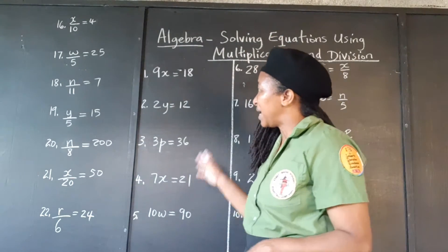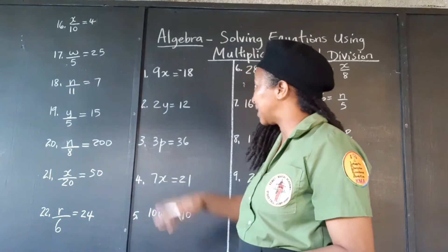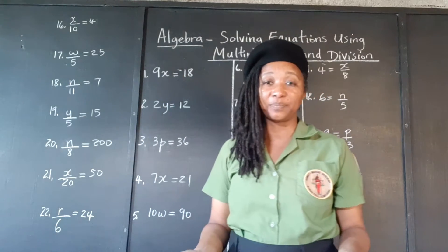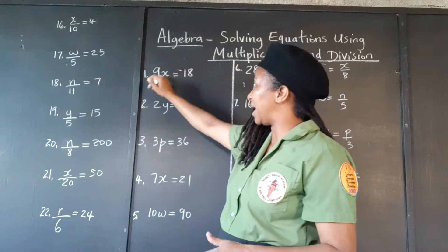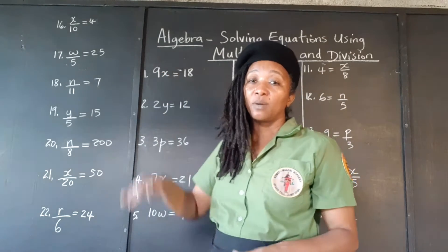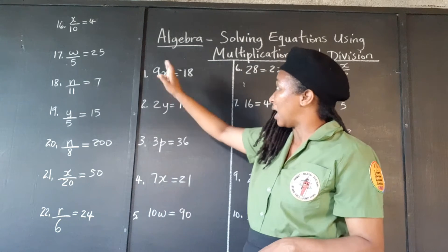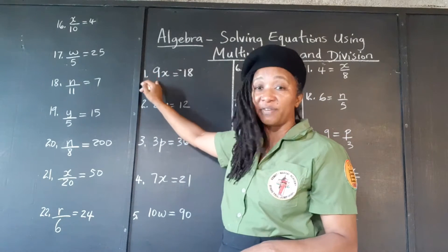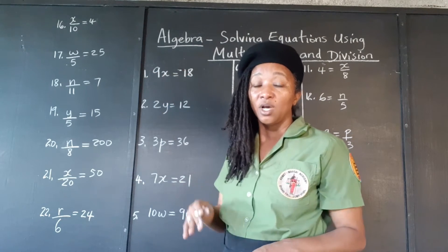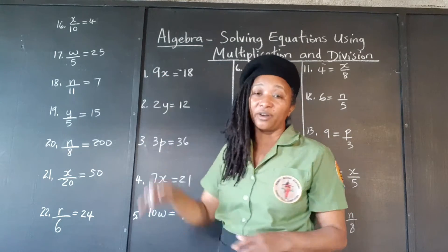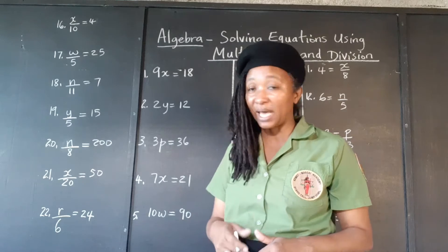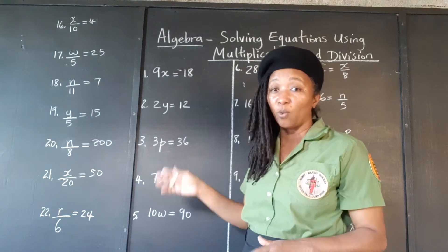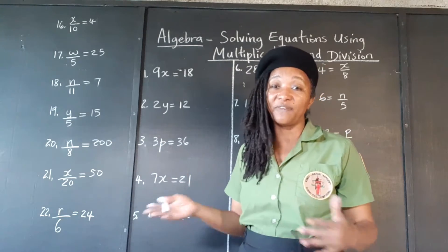We're being asked to find what the variable is. For example, 9 times which number gives 18. We're using x to represent a number which when you multiply 9 by that number you get 18. Because whenever you see a number right next to a letter, we call the number the coefficient and we call the letter the variable. Whenever you see them right beside each other, it actually means they are being multiplied by each other. So 9x means 9 times x. 2y means 2 times y.